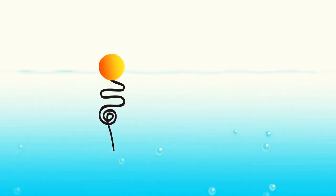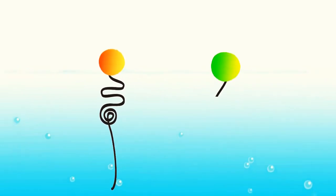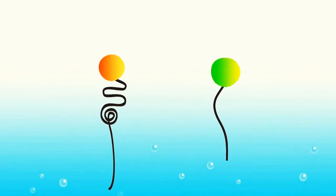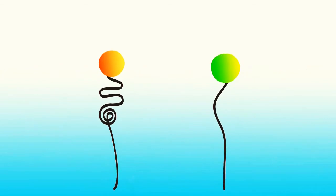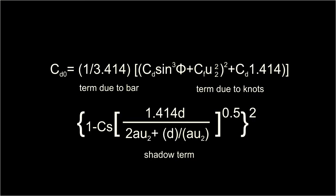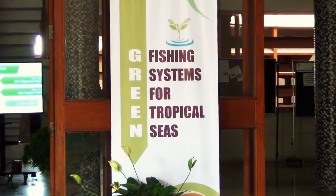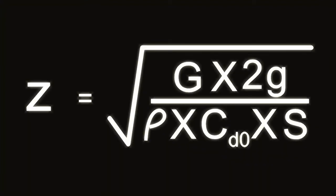Purse seines, while sinking, have a snake pattern at the top, then twist a little, and then only sink straight into the water. Whereas ring seines first show some bulging due to the water current, and then only sink straight into the water. Due to this difference in sinking pattern, Misund's formula doesn't hold good for ring seines.